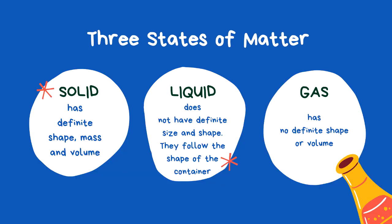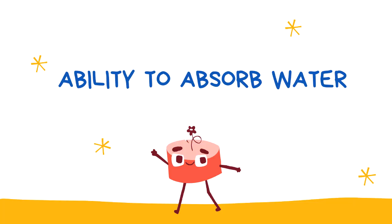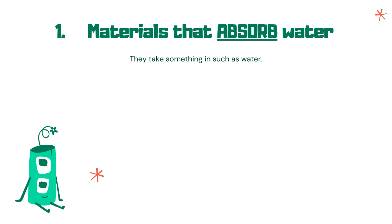Now that we have reviewed matter and its three states, let us now talk about another way to classify materials. We can also classify materials according to their ability to absorb water. First, there are materials that absorb liquid, meaning it takes something in such as water.